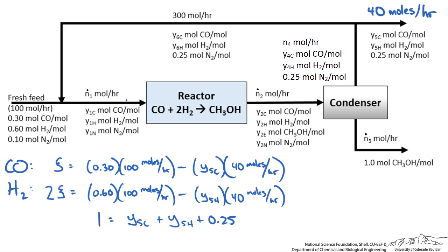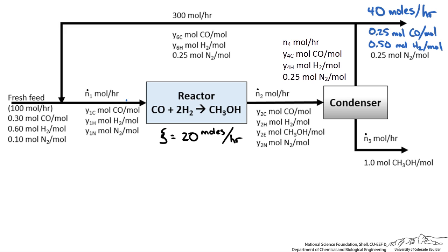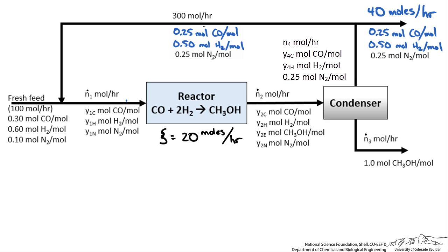Solving gives us the mole fraction of carbon monoxide in the purge as 0.25, mole fraction of hydrogen as 0.5, and the extent of reaction as 20 moles per hour — noting that the extended reaction has units. The recycle stream has the same composition as the purge. From the reactor, 1 mole of methanol is produced per reaction, and with an extent of reaction of 20 moles per hour, 20 moles per hour of methanol leave the condenser as product.